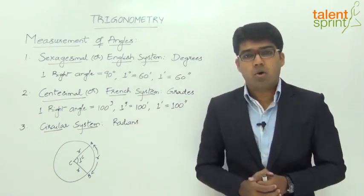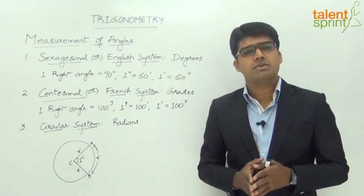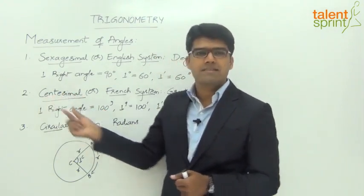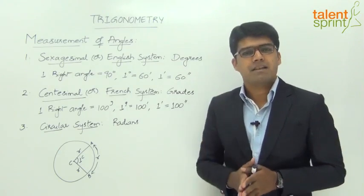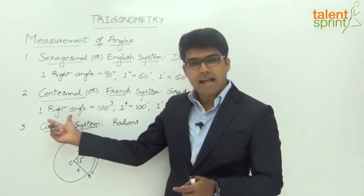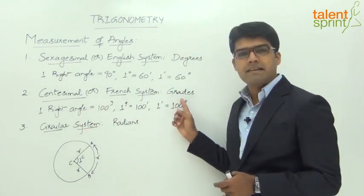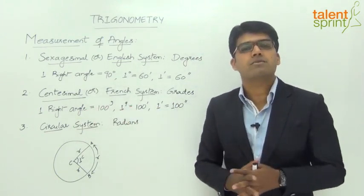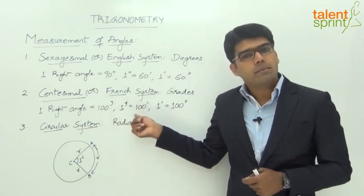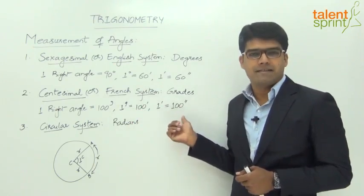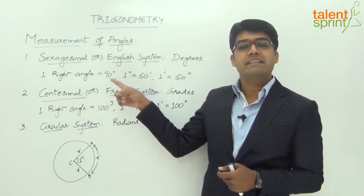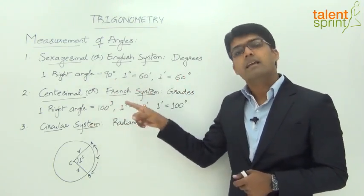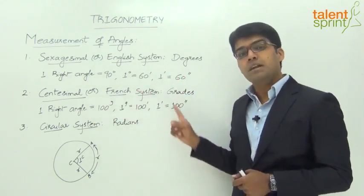The second system is the centesimal or French system, where angles are measured in terms of grades. The root word 'cent' means 100, so in this system one right angle is equal to 100 grades. Each grade is equal to 100 minutes and each minute is equal to 100 seconds. Comparing the two: in the English system one right angle is 90 degrees with 60 minutes per degree and 60 seconds per minute, whereas in the French system one right angle is 100 grades with 100 minutes per grade and 100 seconds per minute.